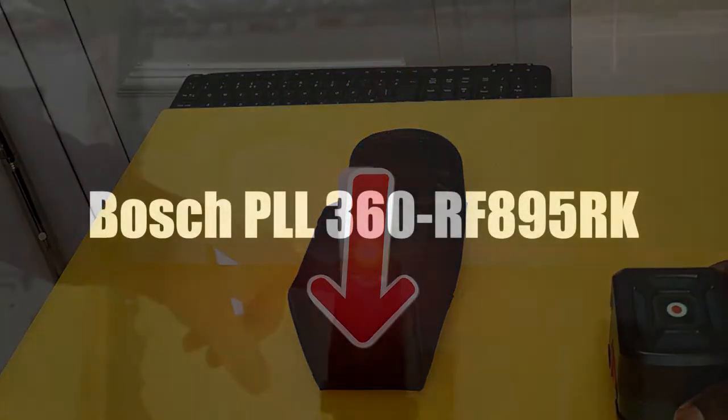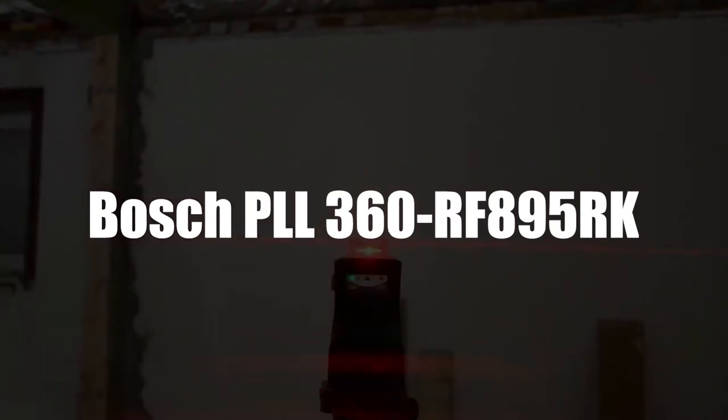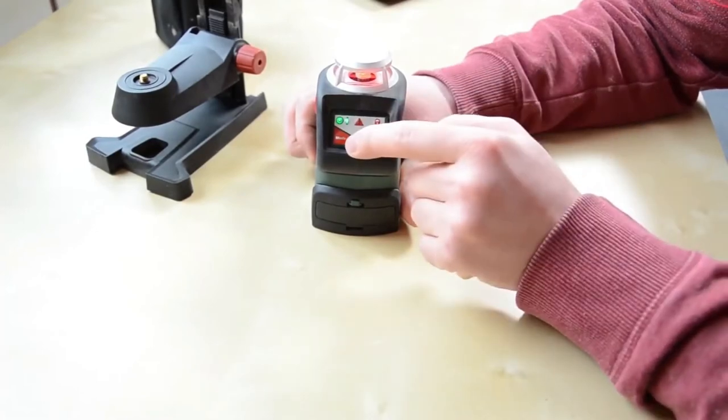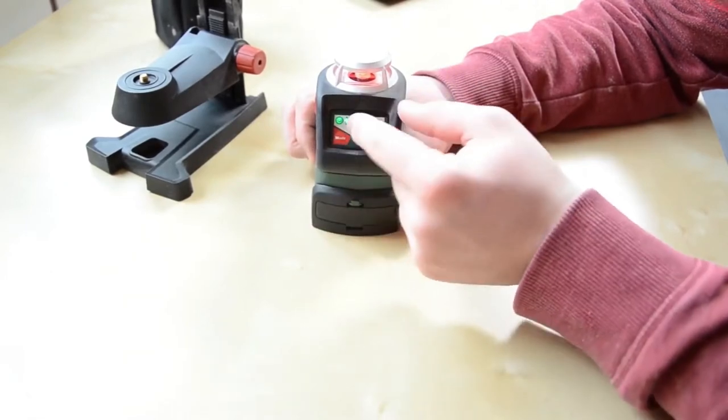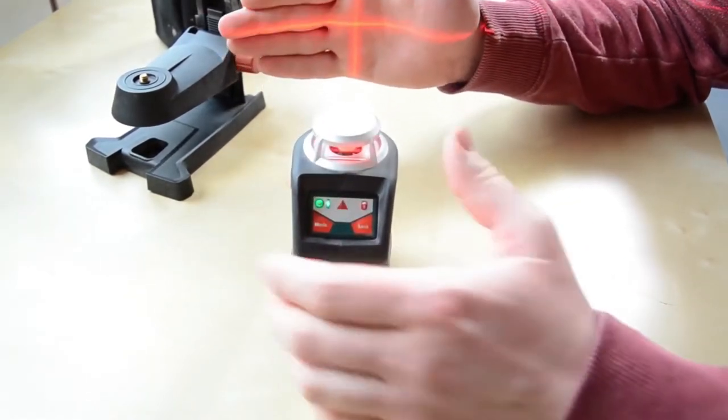In third place now, we have the Bosch 360-degree Line Laser Level Model PLL 360. If you're looking for a device that is both easy to use and efficient, then you'll love this model from Bosch. With its small size and lightweight, this model is designed to be as simplistic as it can possibly be.